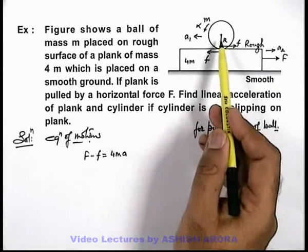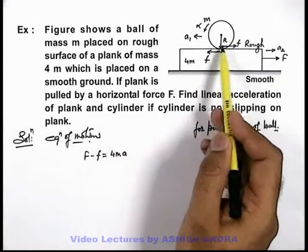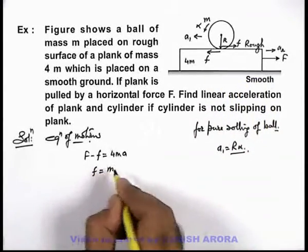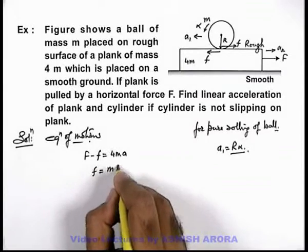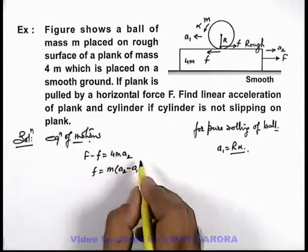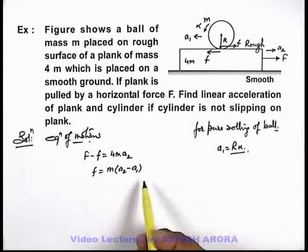And for the ball we can write, the only force acting on it is friction. So friction we can write as small m into a₂ minus a₁. And here also I must write a₂ because plank is moving with an acceleration a₂.